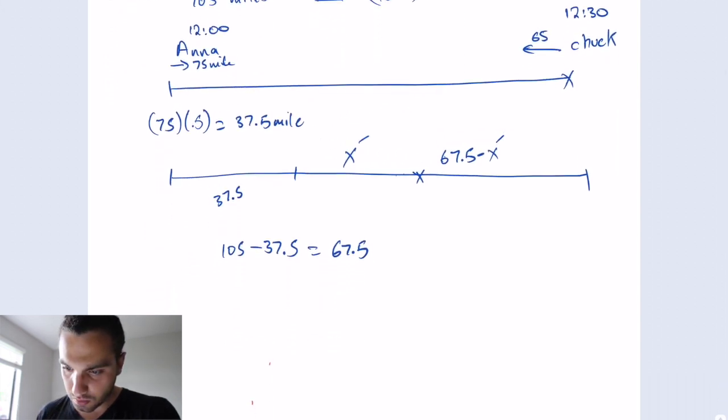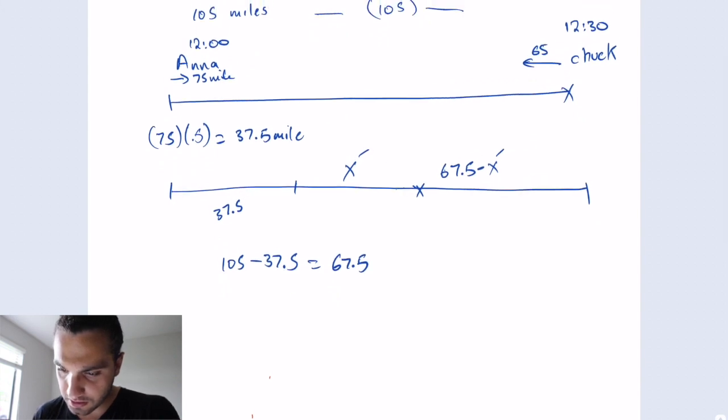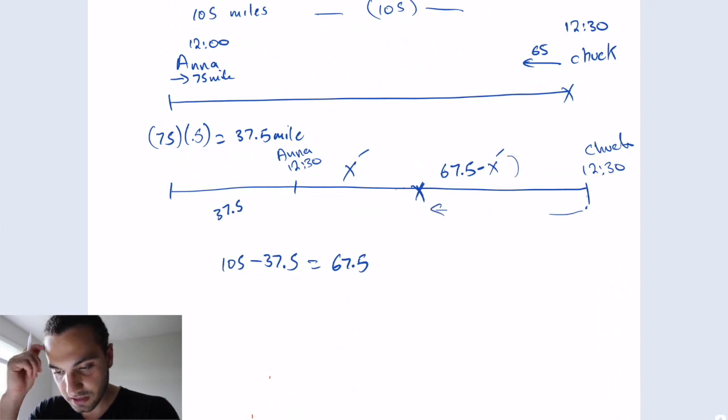So now when they connect here, the time is going to be the same. So now here Anna from this point is at 12:30, and this one here is Chuck. So both of them are going to have the same time. So the time is going to be the same for both of them. So we can say T for Anna is going to equal T for Chuck.